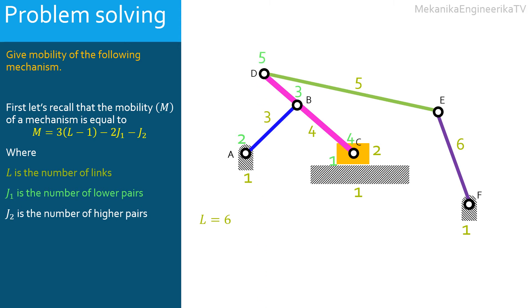The pin joint D connecting the bar CD to the bar DE, the pin joint E connecting the bar DE to the bar EF, and the pin joint F connecting the ground to the bar EF.